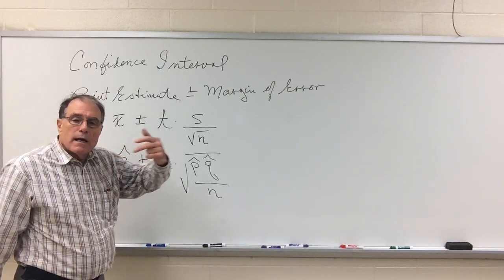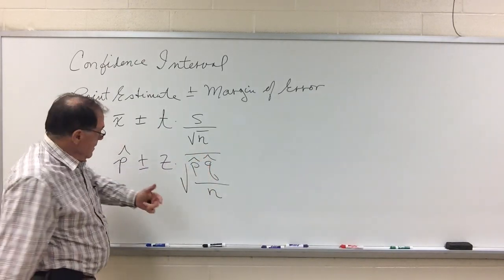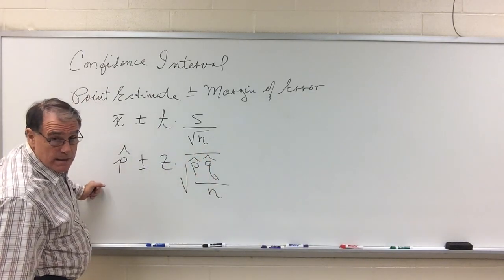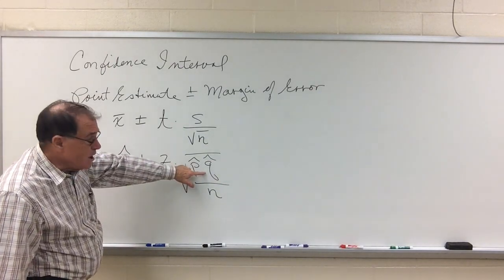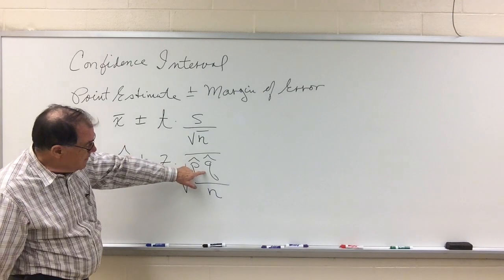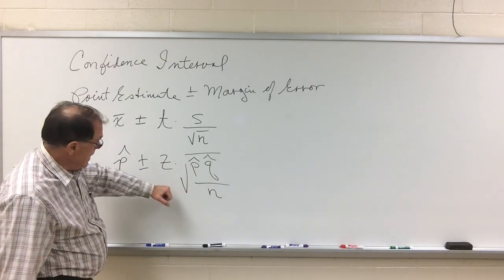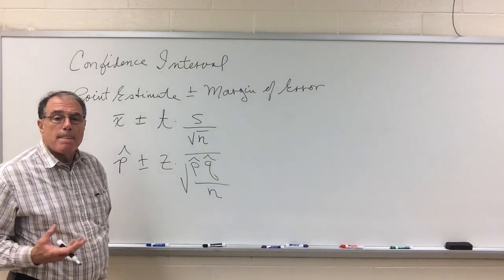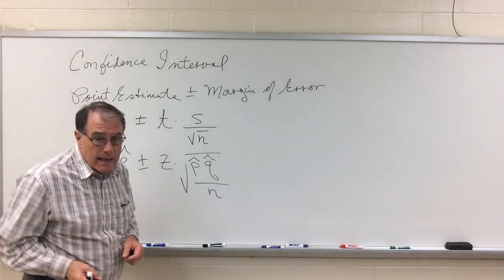So if I'm collecting M&Ms, and say I've got 20 in the bag and 5 are blue, and I'm interested in blue, and I want a confidence interval for the proportion of blue M&Ms, then p-hat would be 5 out of 20, q-hat would be the conjugate 15 out of 20, and the sample size would be 20. And the z-score determined by my confidence level.